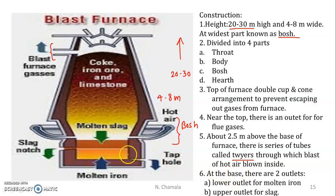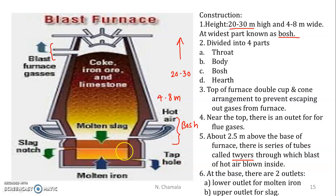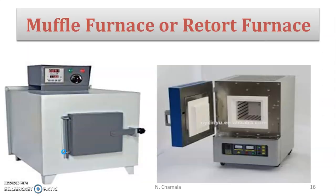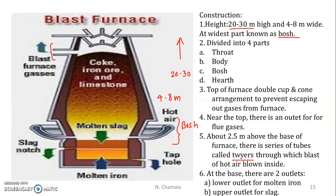At the base there are two outlets: one at the top for slag removal, and from the bottom opening molten metal is removed from the lower outlet. So this is about the blast furnace.